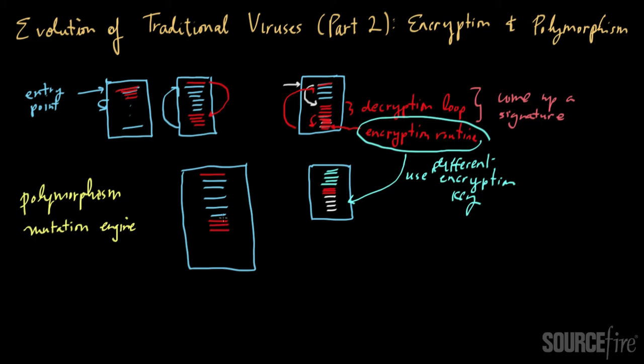The main body of the virus typically would contain a decryption routine and then would decrypt. Let's say you had some encrypted content down here. This encrypted content would get decrypted. You determine that it's malicious. And as part of that decrypted content, you would also have a mutation engine.